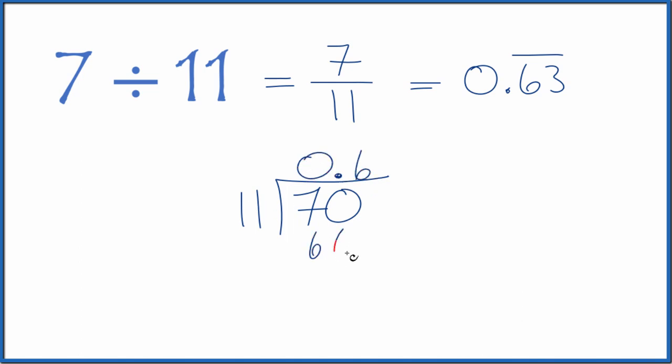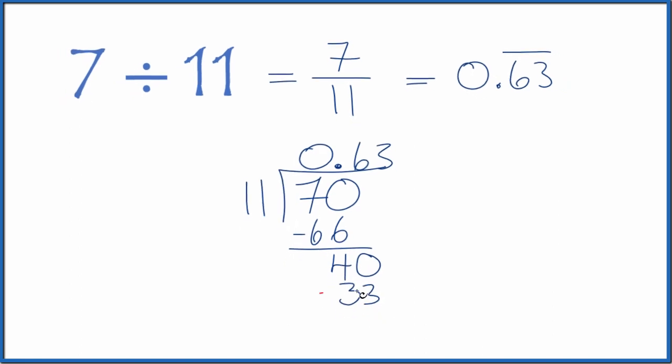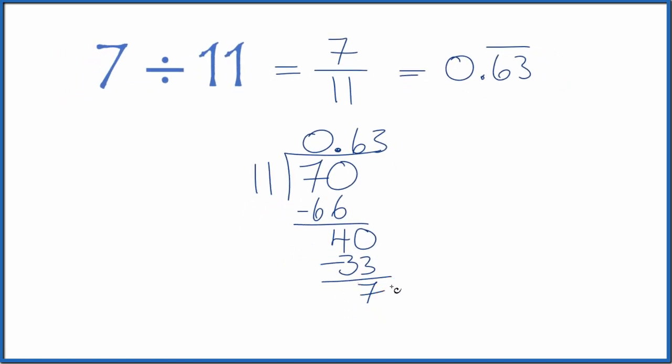I'm going to call this 40 and move over 1. 3 times 11 is 33, and when you subtract you get 7. So call it 70, move over 1. 6 times 11 is 66, subtract you get 4, call it 40, and then we multiply by 3 to get 33.